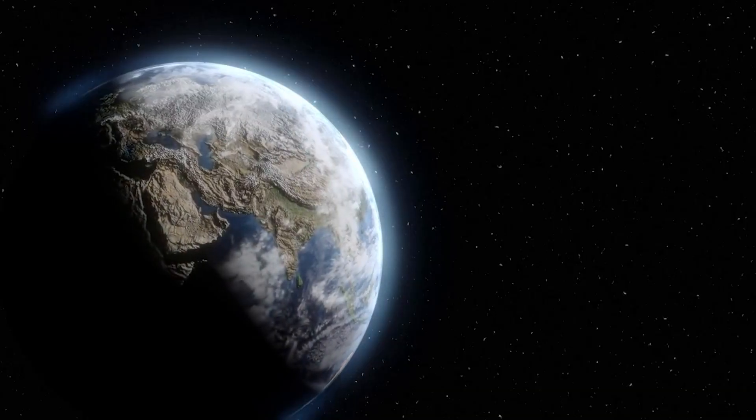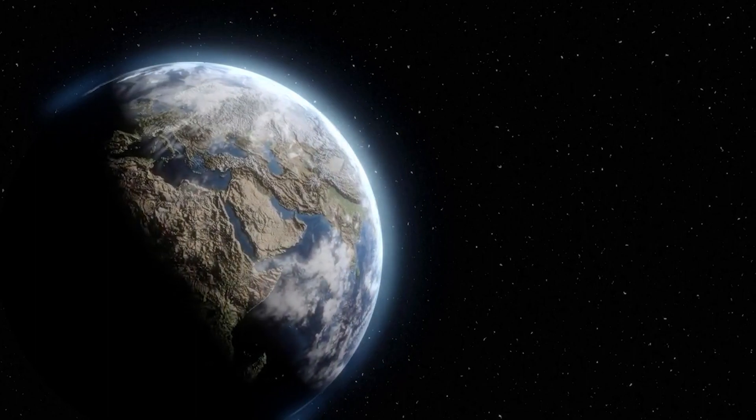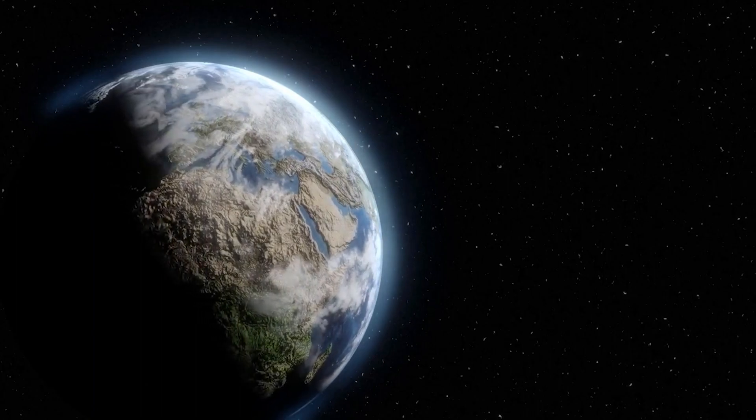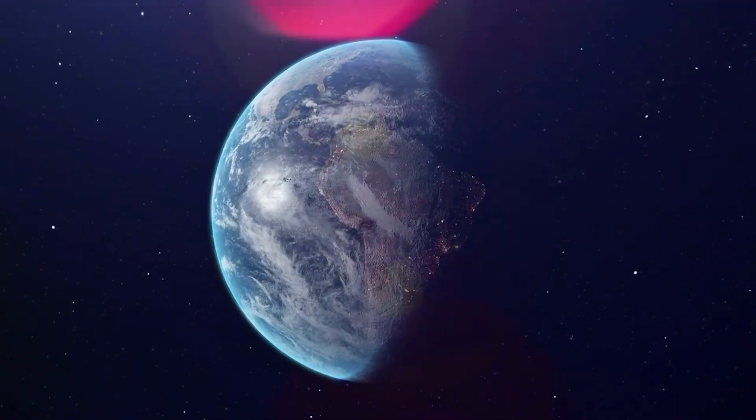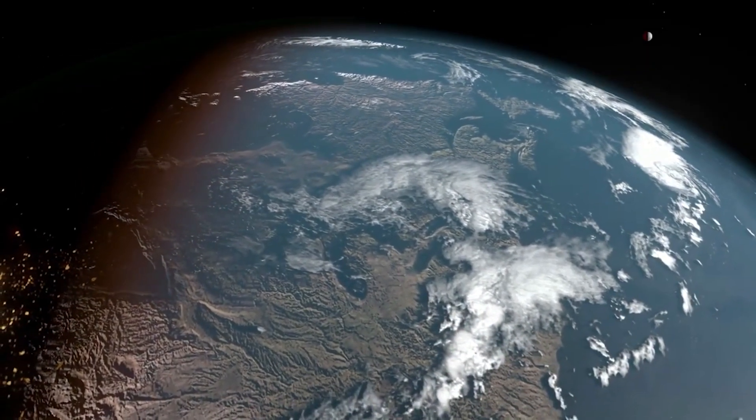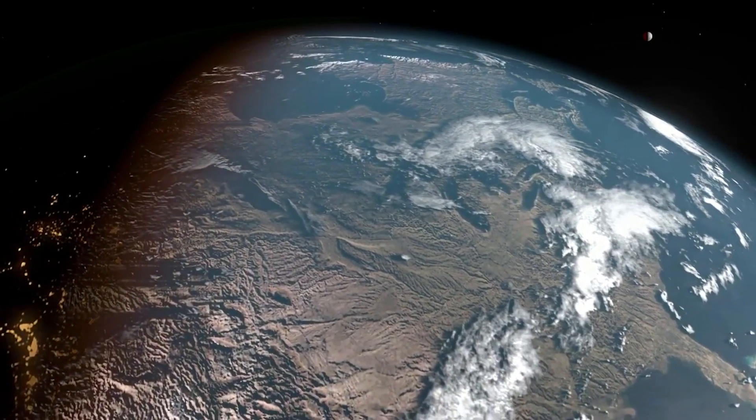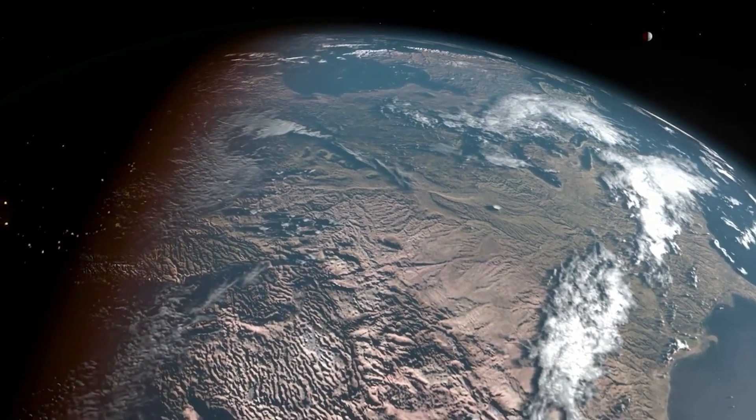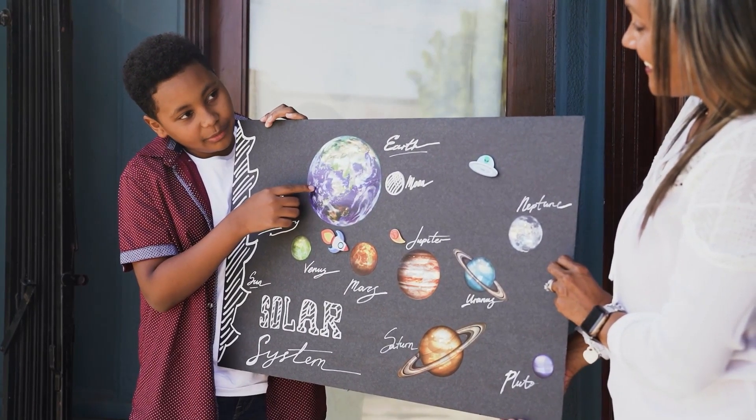It is believed by some scientists that the Earth, around 4.5 billion years ago, gradually formed and grew through the accumulation of icy planetesimals. This theory posits that the Earth was about 60 to 90 percent of its current size during this process. This hypothesis is supported by the similarities in the abundance and isotope ratios of water found in the oldest known carbonaceous chondrite meteorites and meteorites from Vesta, both of which have origins in the solar system's asteroid belt.